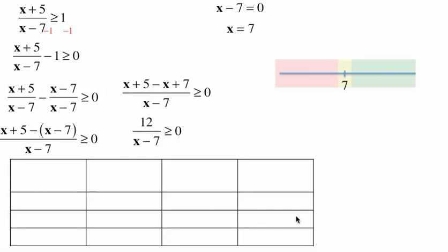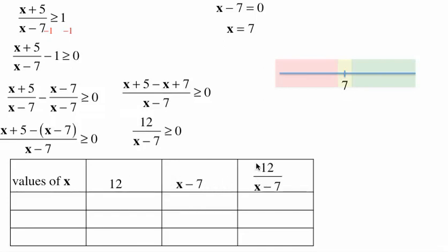We're going to build our chart based on that. We'll look at the values of x, the numerator which is 12 (always positive), and the denominator which is x minus 7. Then we'll look at the whole expression, which is 12 over x minus 7.